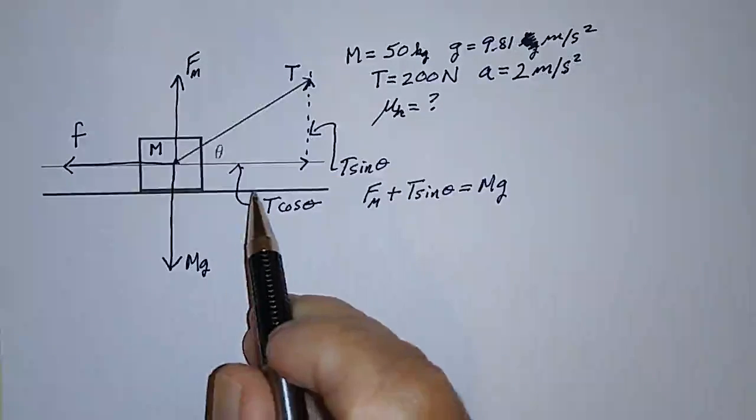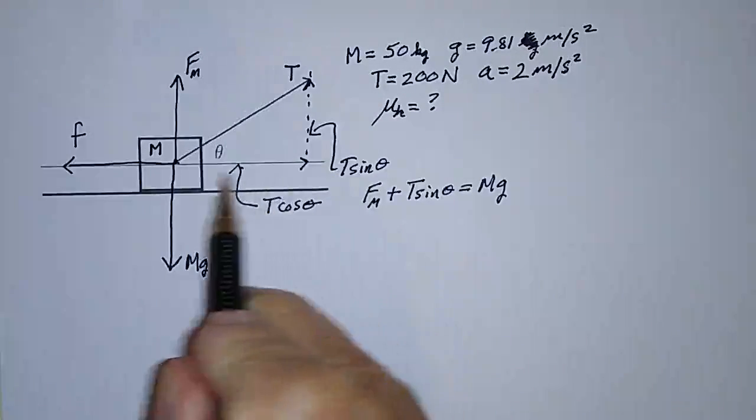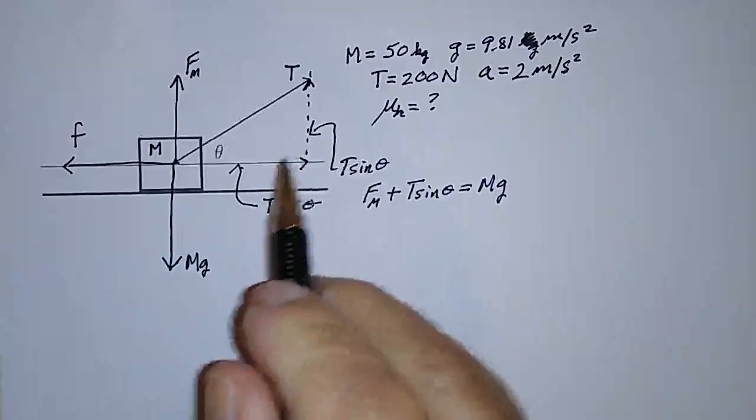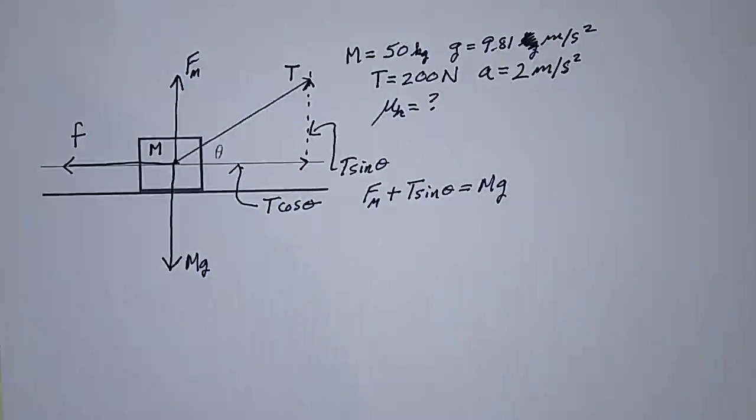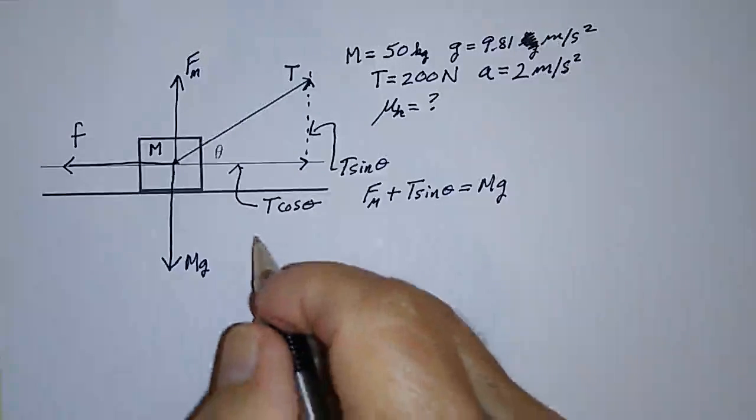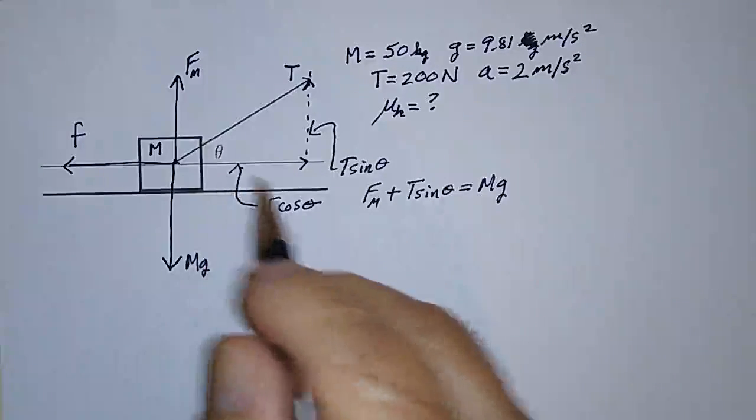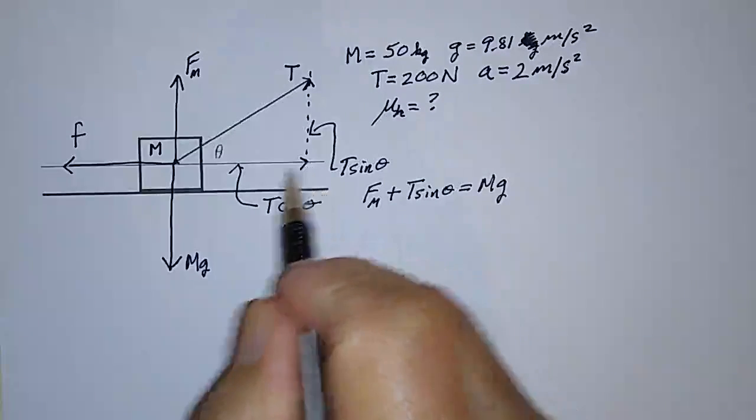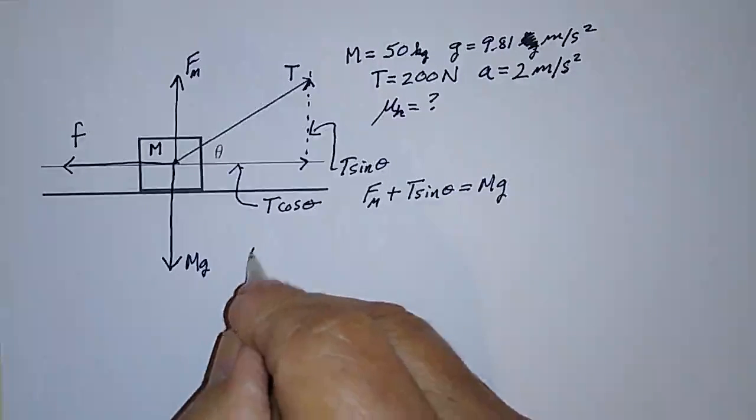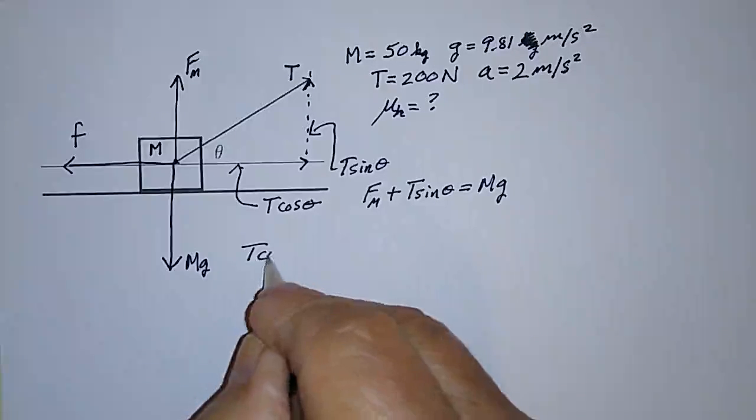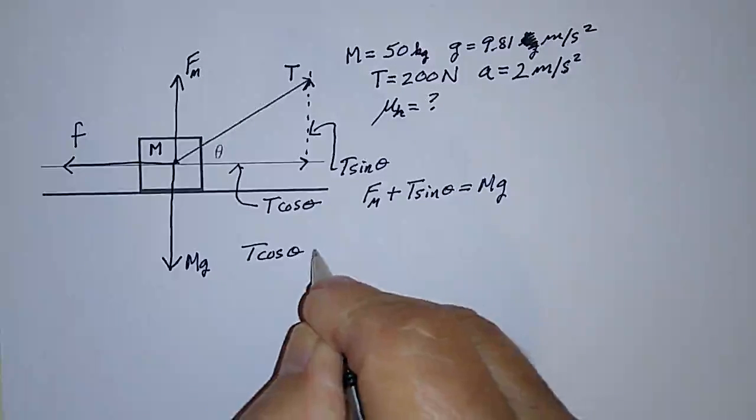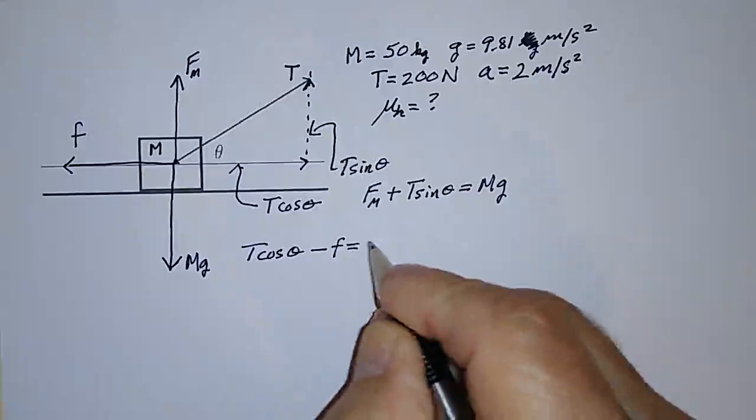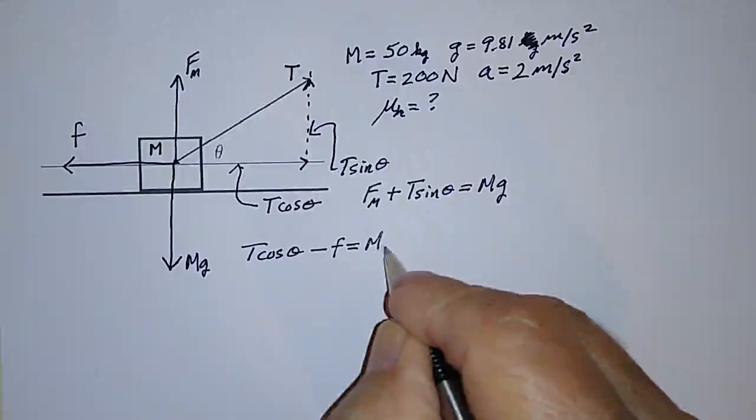If it's accelerating, then the net force in this dimension is going to produce the mass times the acceleration two meters per second squared. So we can write down Newton's second law like this. The force in this direction is T cosine theta minus the frictional force, which has to be equal to MA.